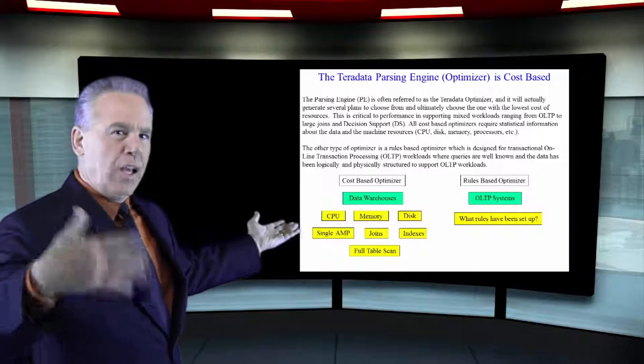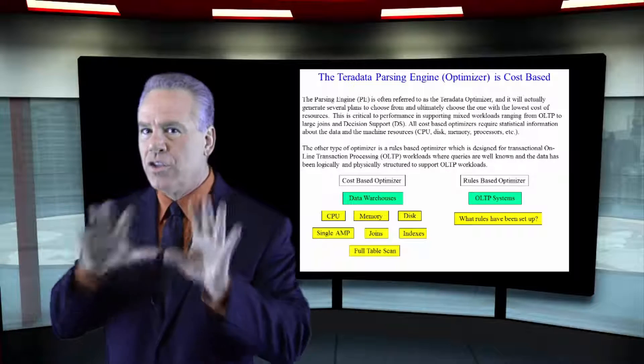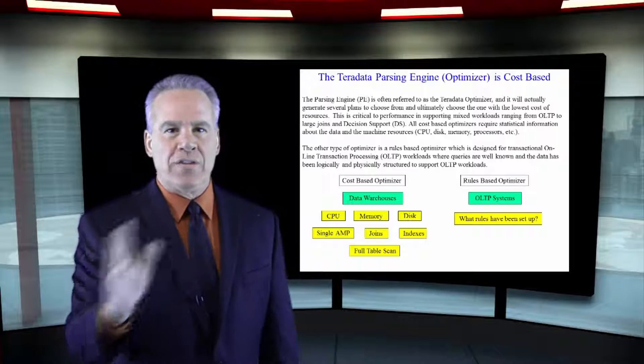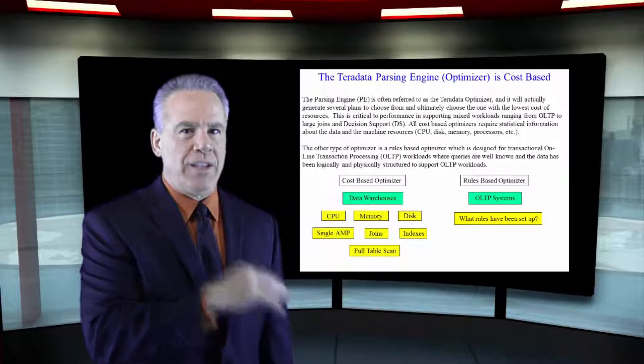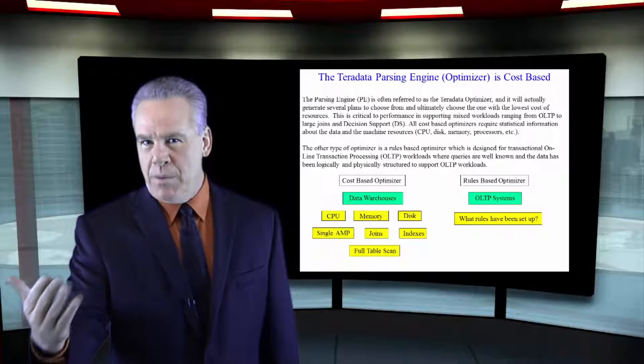There are also other optimizers that are rules-based. Oh, I'm at the ATM. Here's rule one. If it takes longer than 30 seconds, do this. So that's the difference between a cost-based and a rules-based optimizer.